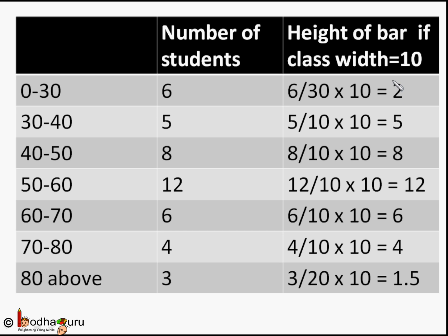The middle classes 30 to 40, 40 to 50, and 50 to 60 remain the same because they are already of width 10. For the 80 to 100 class, when the class size is 20, its height is 3. But when the class size is 10, its height would be 3 divided by 20, into 10, which is equal to 1.5. For the rest of the classes, the values remain the same as they are already of size 10.